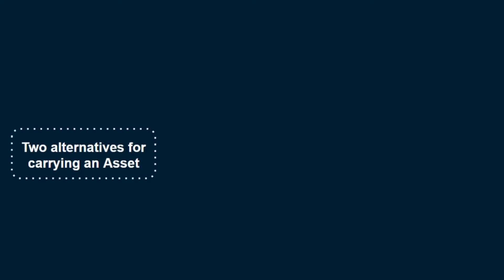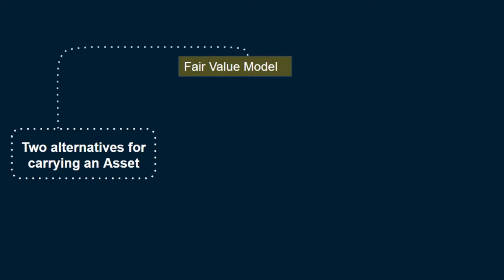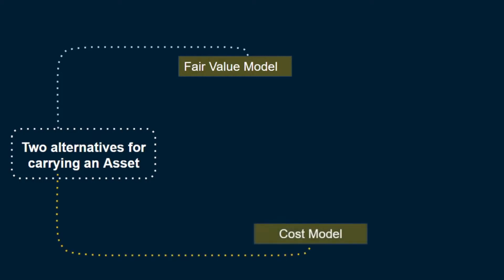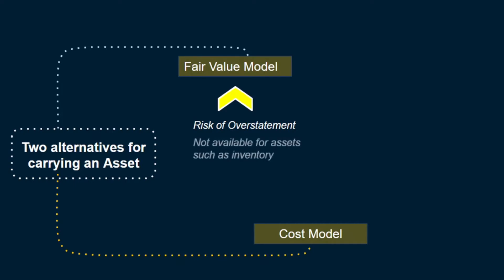When you recognize any asset, we expect to derive future economic benefits from it. Broadly speaking, we have to either carry that asset at fair value — some sort of a fair value model — or at some sort of a cost model. And you may have noticed that standard setters seem to be more cautious when allowing the fair value model, because there's always a risk that a fair value might not eventually be realized and so investors might be misled. Therefore, in some cases like inventory, the fair value option is not there.